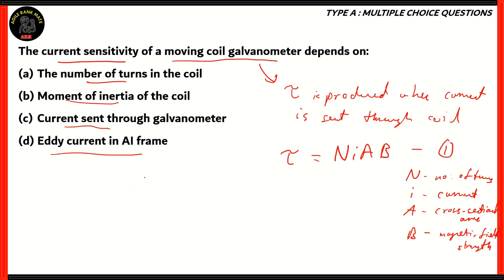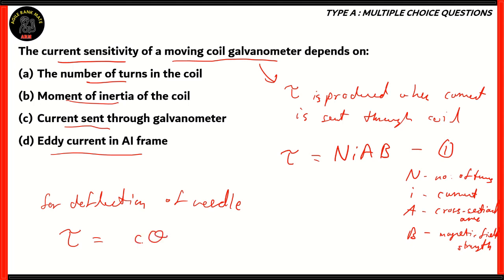In a moving coil galvanometer, the coil is connected to a spring, which is then connected to a needle that is kept on a circular scale, giving us the value of the current. For the deflection of the needle — when you're passing current, torque is produced, and that torque helps to deflect the needle. Therefore, torque is again represented as C × θ, where C is the spring constant (or torsional constant) and θ is the angle of deflection. We represent this as equation two.